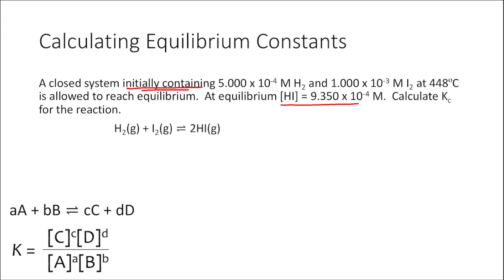What we see in this problem is that only one equilibrium concentration is provided — the concentration of HI. So I'm going to start by writing this chemical equation and constructing what I'll call an ICE chart.